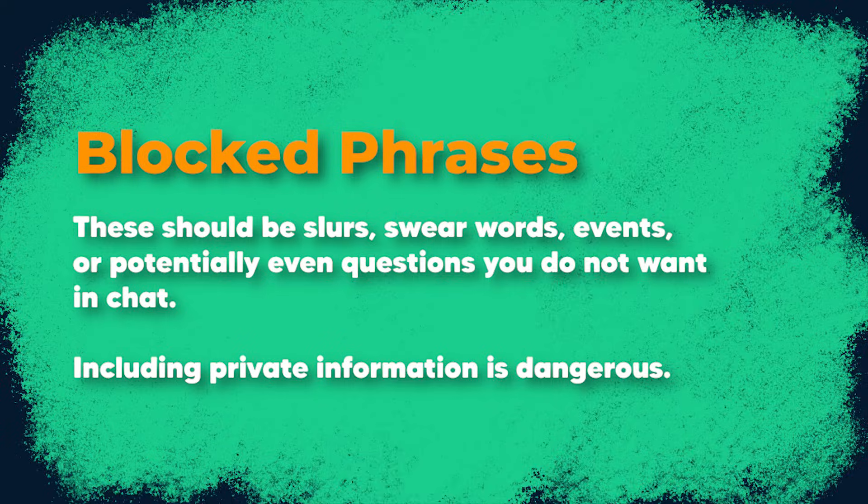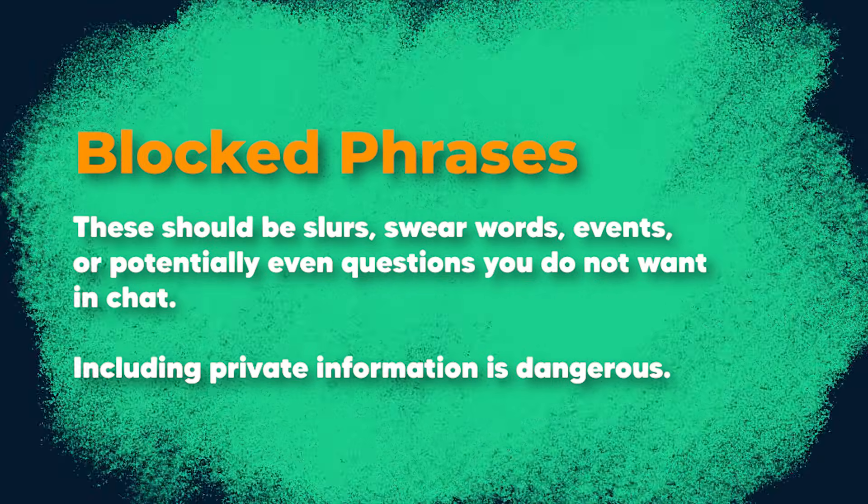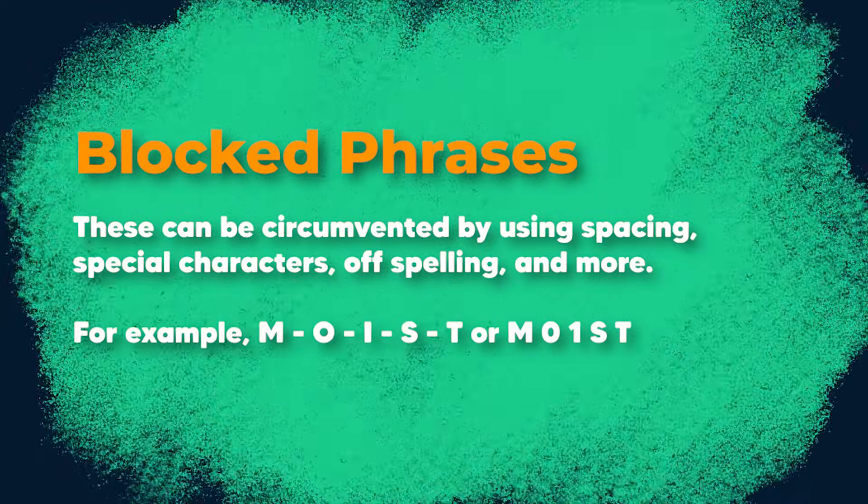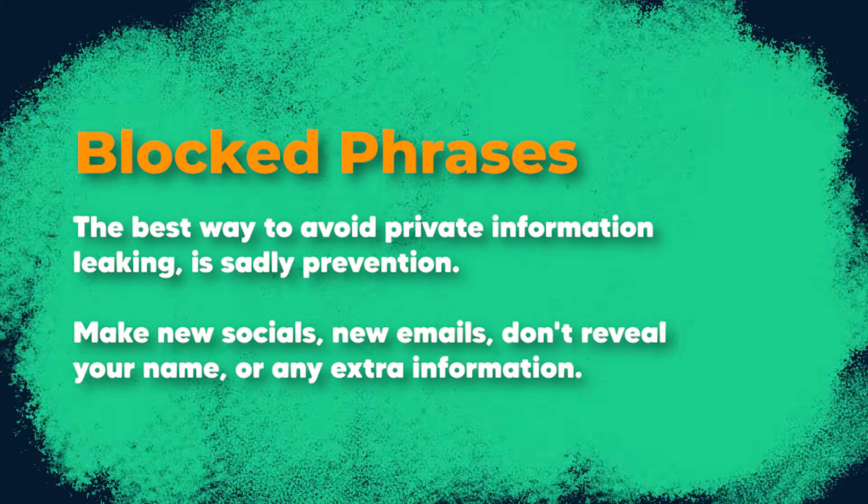You'll often be told to put your personal information in blocked phrases so it can't appear in your chat — things like your full name, phone number, or address. But that's actually a bad idea. Blocked phrases only stop that exact phrase from being posted. If someone finds your phone number and posts it, getting a block confirms you have something to hide — without any automatic ban or report to Twitch. They can just add spaces or write it differently. Instead, don't react and quietly deal with the situation through bans and other offline methods to protect yourself.